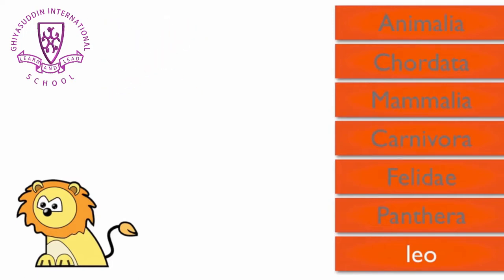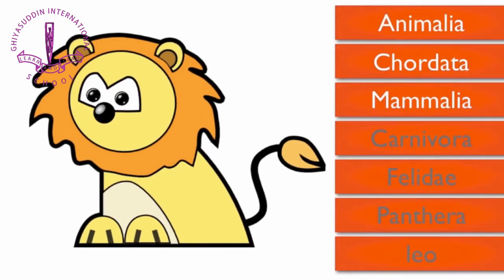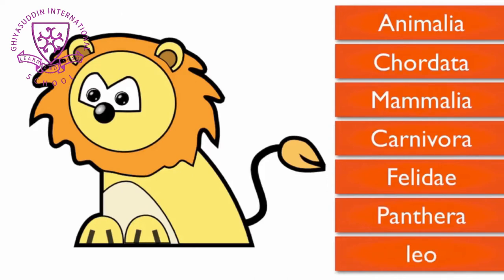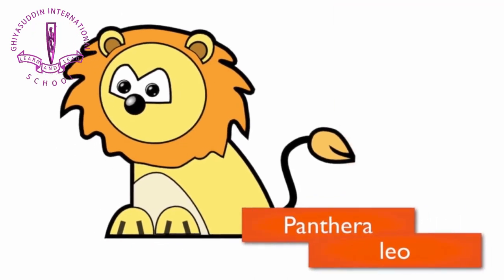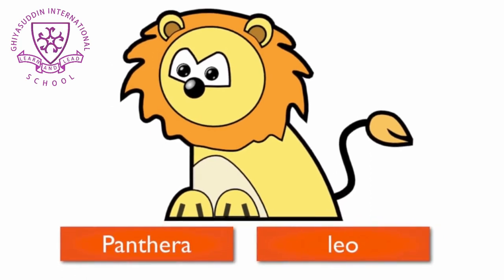So a lion is an animal having a backbone, has hair or fur, eats meat, has retractable claws, can roar, and goes by the name leo. The lion's scientific name is Panthera leo. A scientific name identifies an organism by its genus and species, so the lion is Panthera leo.